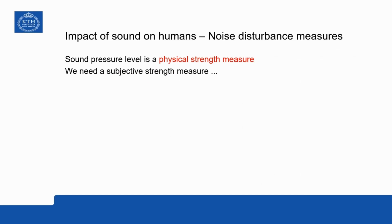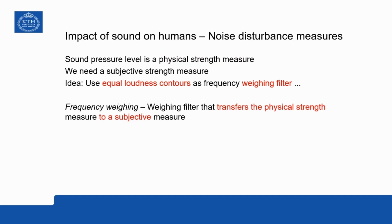Sound pressure level in dB is actually a physical strength measure, which has very little to do with how we as humans perceive noise. So we actually need some kind of subjective strength measure. The idea is to use these equal loudness contours as frequency-weighting filters, so that if we apply this frequency-weighting, we can transfer the physical strength measure to a subjective measure indicating how we perceive noise.